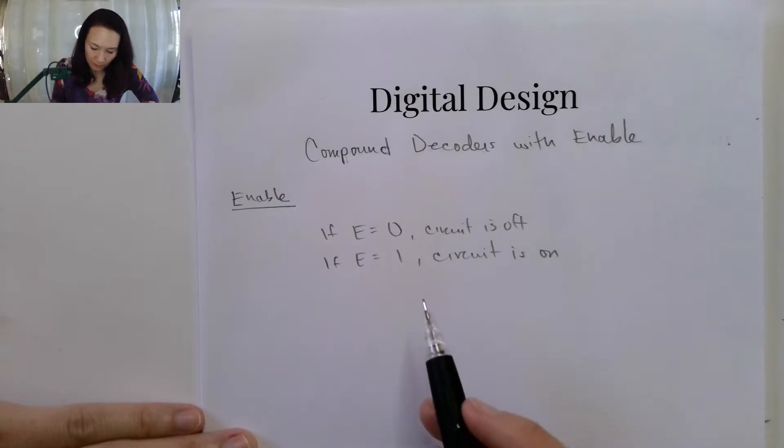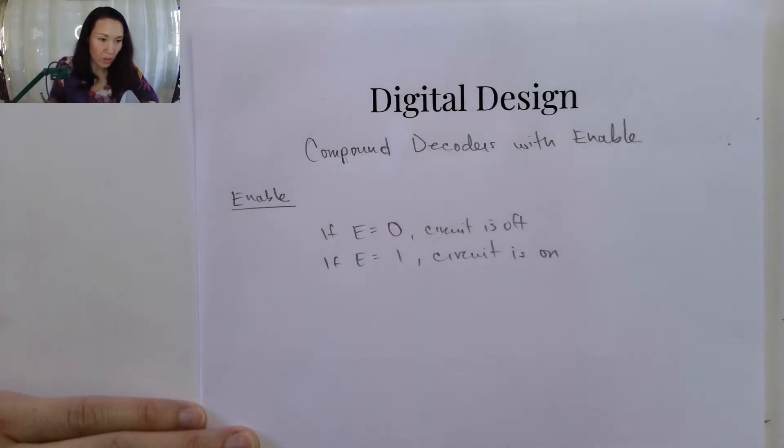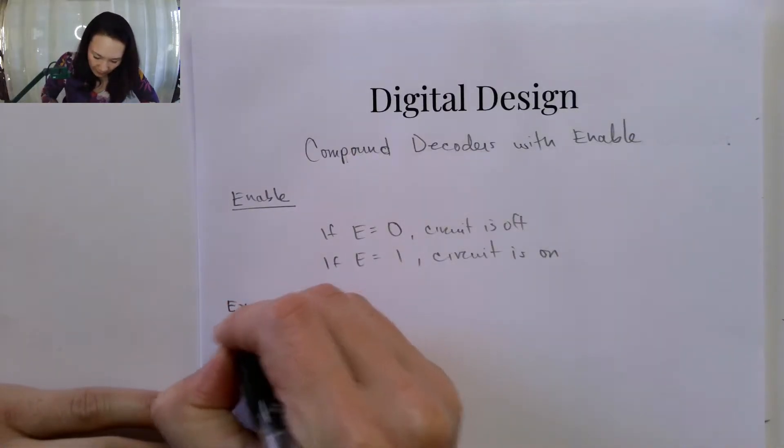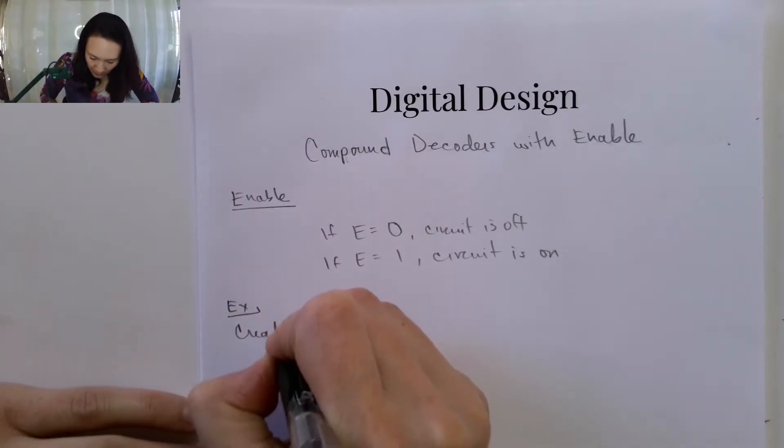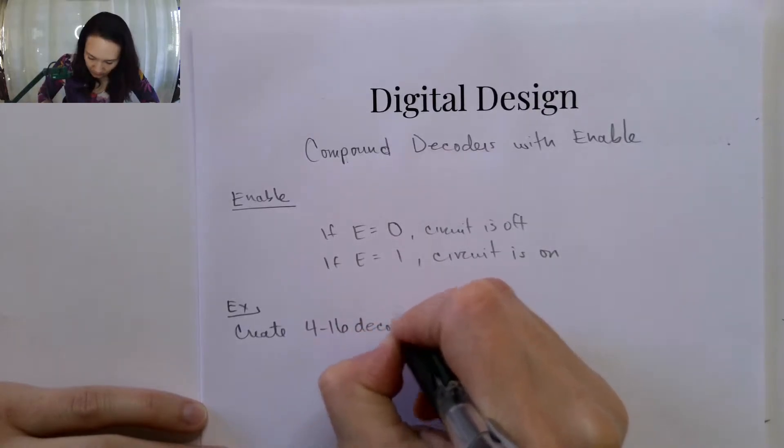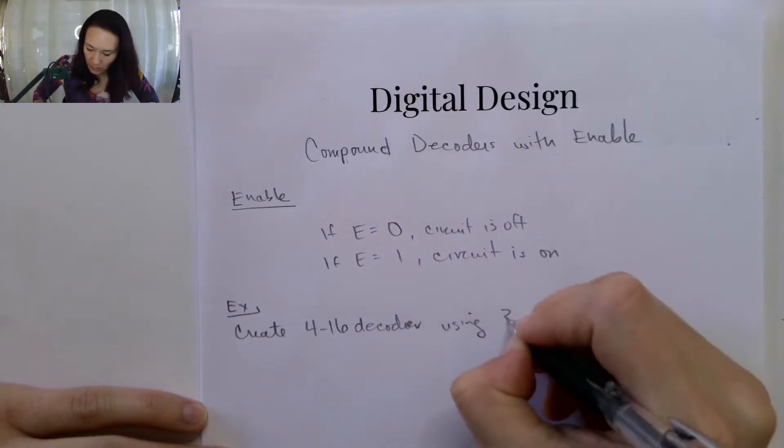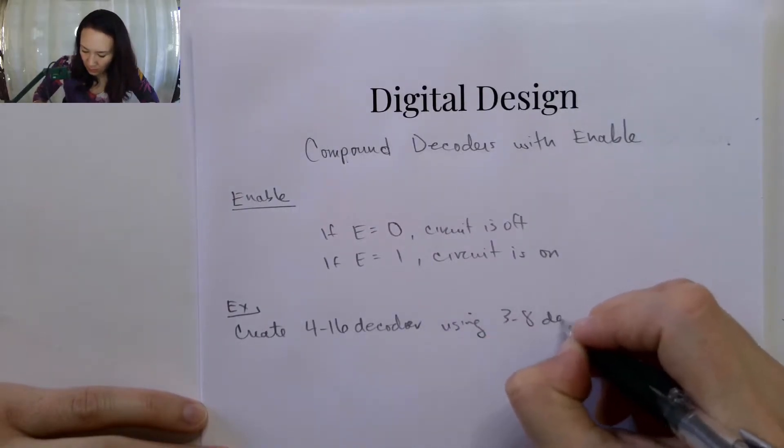Going forward, we're going to sometimes be using an enable line like this. So let me show you a simple example of how we would use an enabler to basically switch between two different decoders. Here's the example: I want to show you how to create a 4-to-16-bit decoder using only 3-to-8-bit decoders.